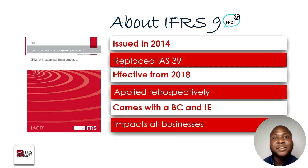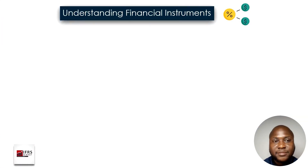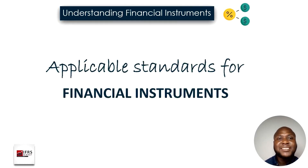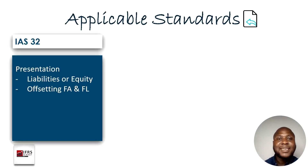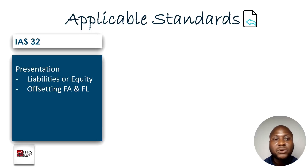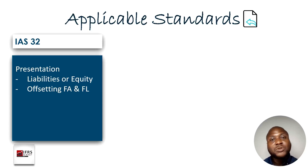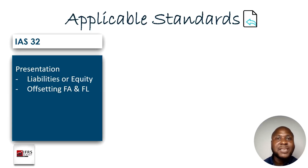Let's talk about the applicable standards for financial instruments aside from IFRS 9. The other standards are still in effect. One of them is IAS 32. IAS 32 talks about how to present your financial instruments in terms of liabilities and equity — how to distinguish them — and it also addresses offsetting, whether you need to offset your financial assets against your financial liabilities.